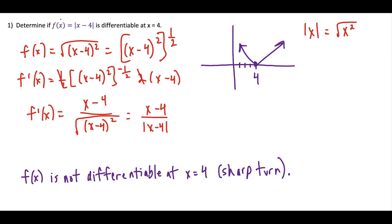The original function f(x) has domain all real numbers. But when we investigate the domain of f prime, we look at which values of x make the denominator equal to zero. The only value that does that is four. So that's our restriction, which also supports that f is not differentiable at x equals four.